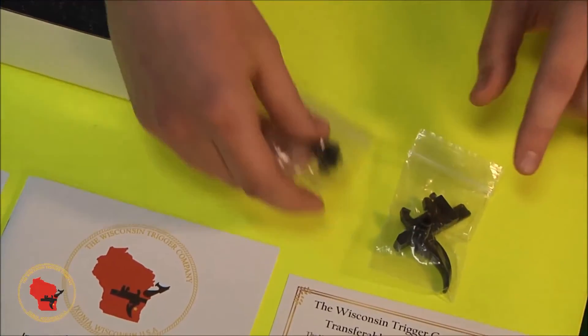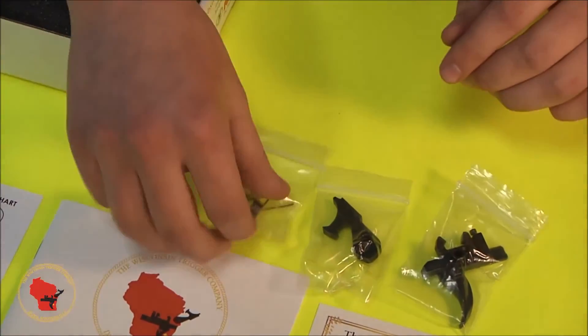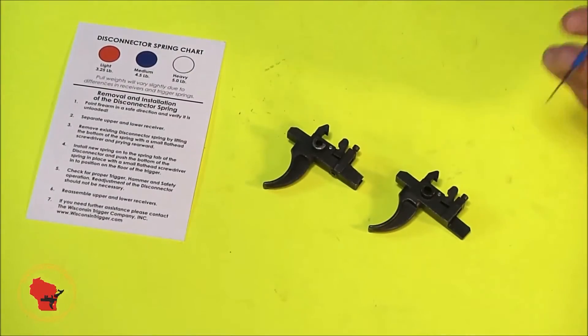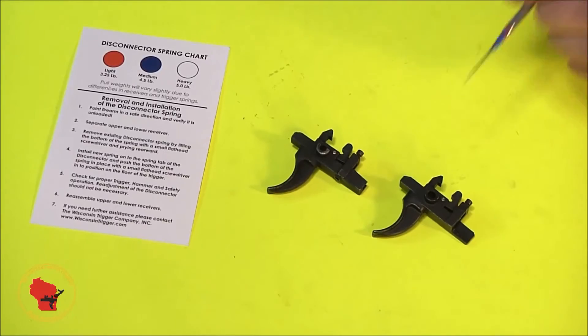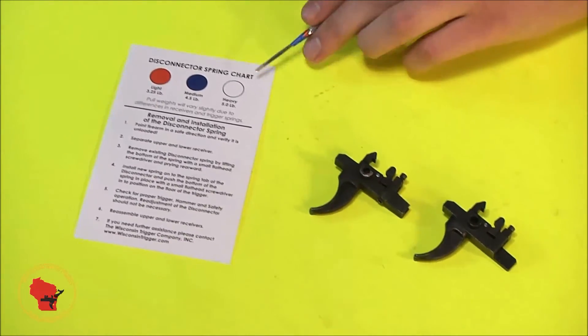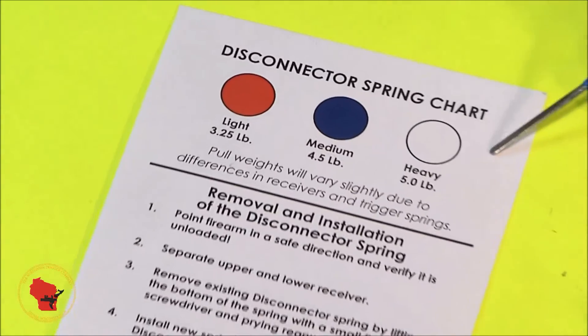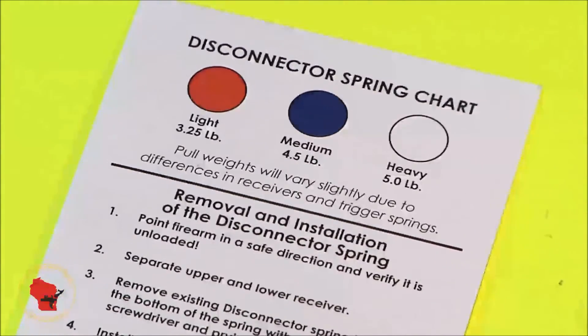But under that, we have all of the fun parts. We have your trigger housing, the hammer, a bag of springs, and the pins you're going to need for all this. Before you begin your final installation, you might want to take a look at the included spring chart here. It'll help you decide which disconnector you'd like in your trigger, and this is just a little something you can do to fine-tune it.